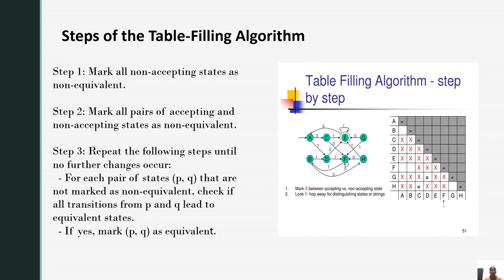For each pair of states P, Q that are not marked as non-equivalent, check if all transitions from P and Q lead to equivalent states. If yes, mark P, Q as equivalent. If not equivalent, just leave it the same.